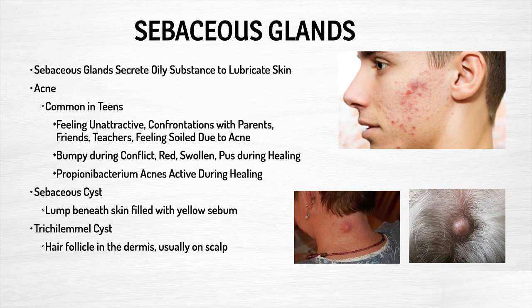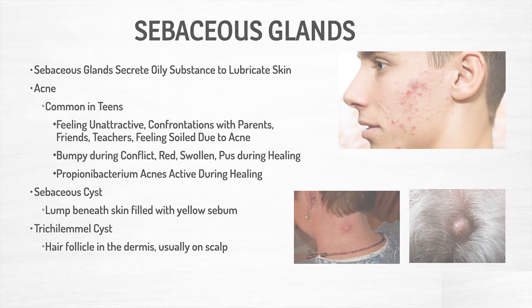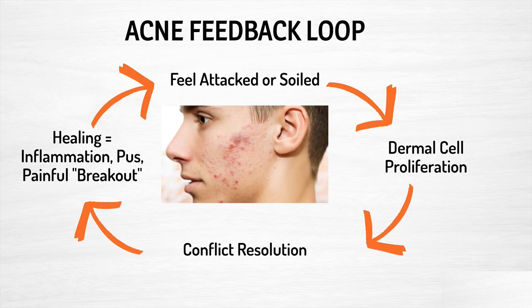We also have sebaceous cysts and trichilemmal cysts, which can be on hair follicles — a lump beneath the skin that forms. I have one on the very top of my head and I've determined it came from an attack conflict because I started learning to do inversions and handstands, beginning with headstands. I think the top of my head got an attack conflict and formed one of these hair follicle cysts.